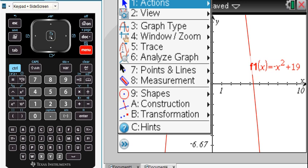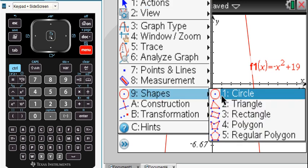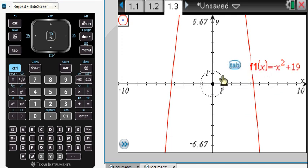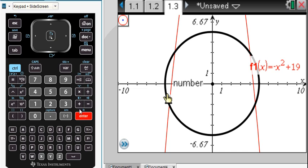Here's a fun way to do a circle. I could choose shapes and choose circle. I want it on the origin. Do you remember the radius of that circle? Yeah, it's five. I'm just going to type five and press enter. Boom. There's a circle of radius five.